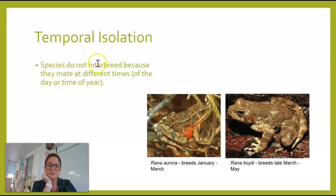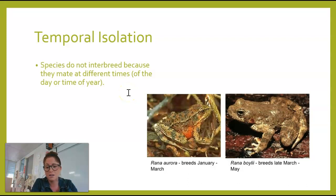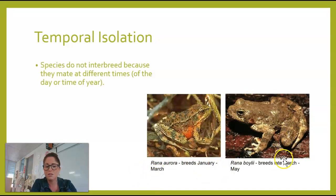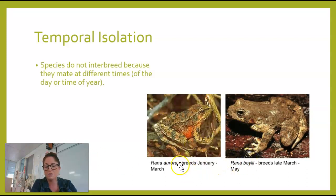Another isolating mechanism is temporal isolation, which simply means time — time of year or time of day. These two species don't breed with each other because one breeds January through March and the other March through May. Their breeding seasons really don't overlap enough, so they've changed over time and become different species. They're very closely related, but their breeding time has caused them to undergo changes that make them now reproductively isolated from each other.